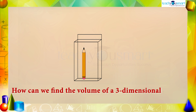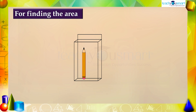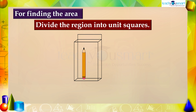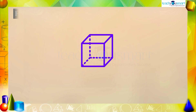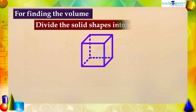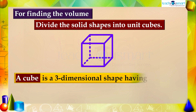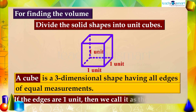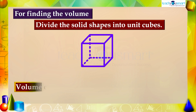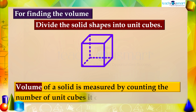How can we find the volume of a three-dimensional shape? When we find the area of a region, we divide the region into unit squares. Similarly, for finding the volume of a 3D shape, we need to divide it into unit cubes. A cube is a three-dimensional shape having all edges of equal measurements. If the edges are one unit, we call it a unit cube. So the volume of a solid is measured by counting the number of unit cubes it contains.